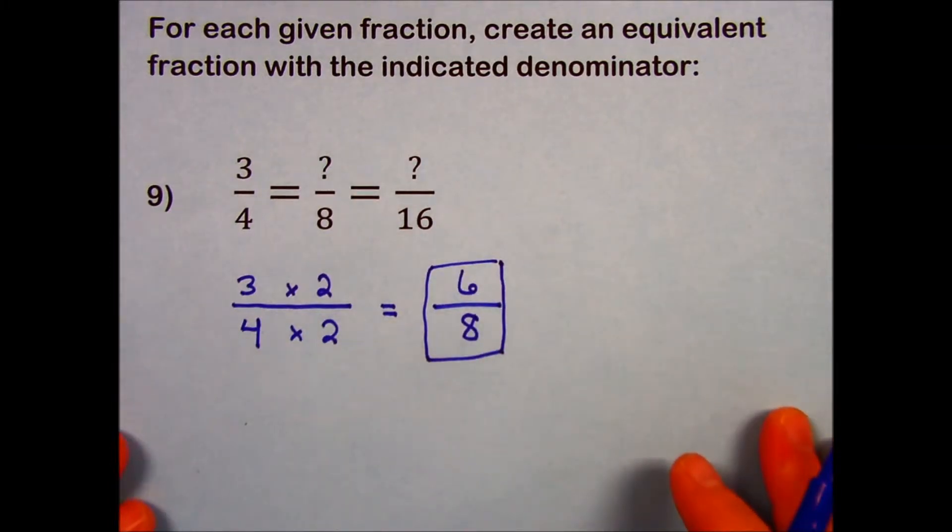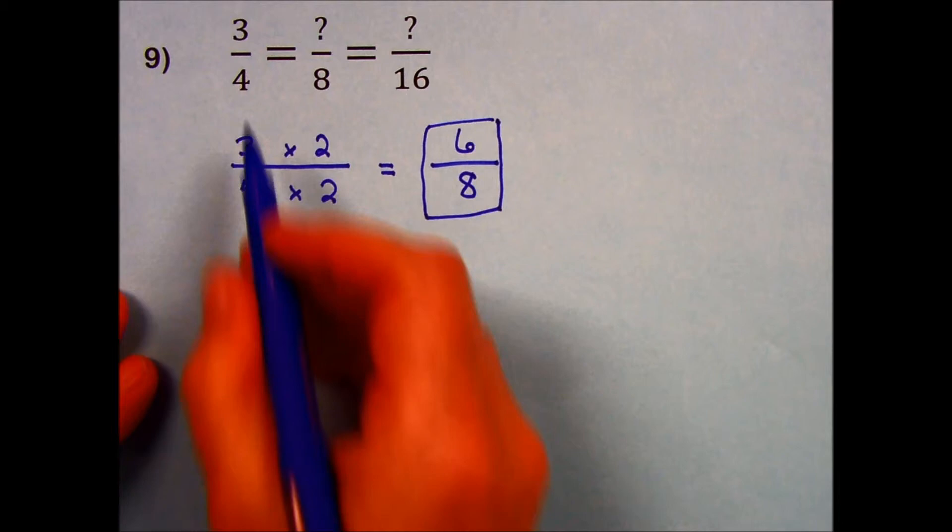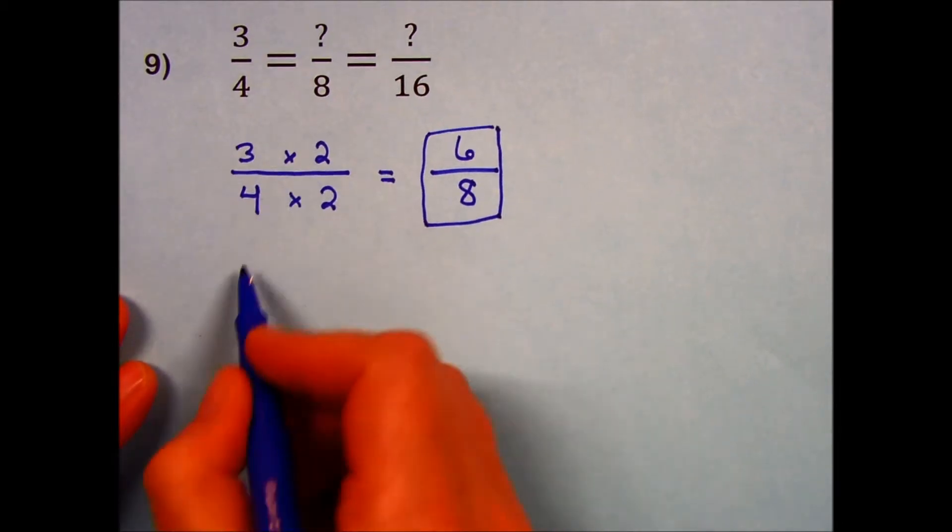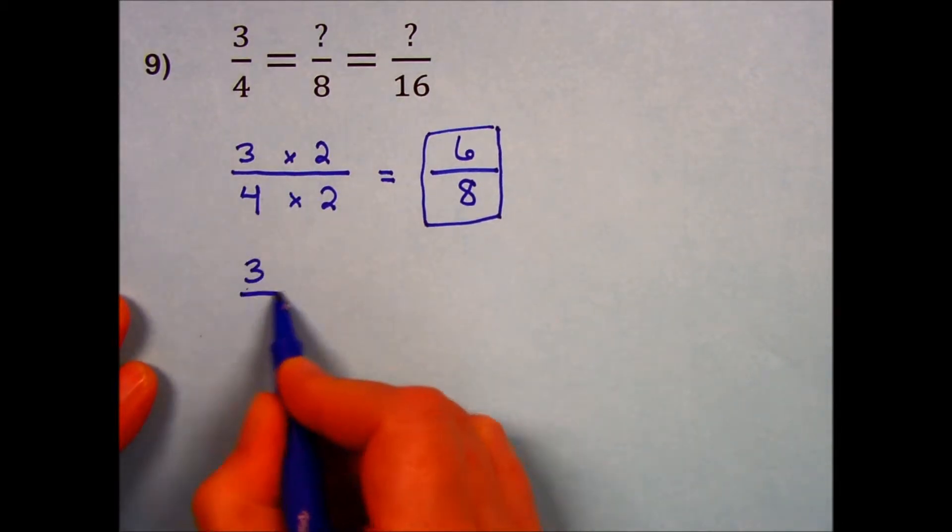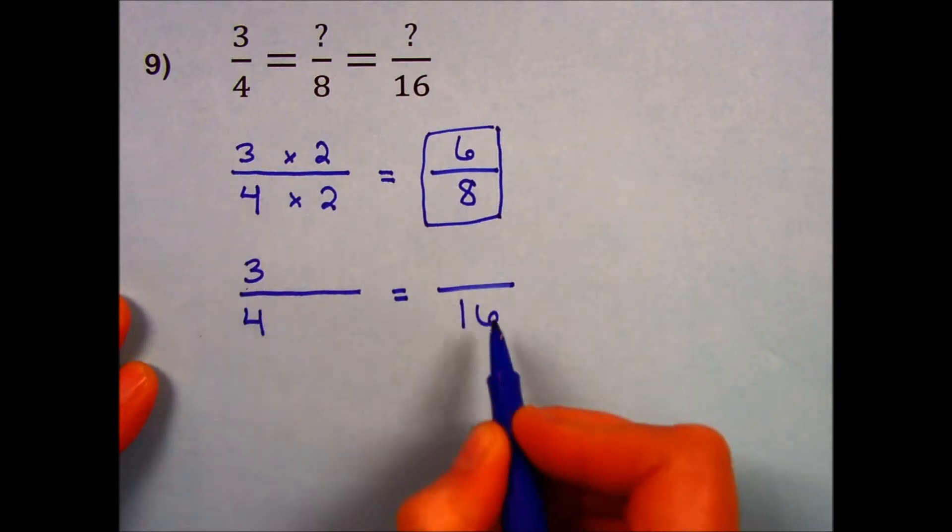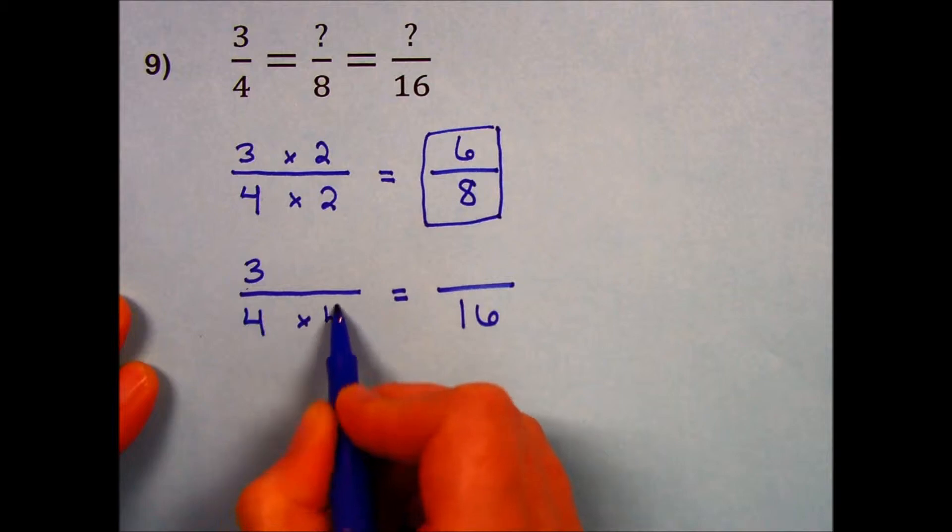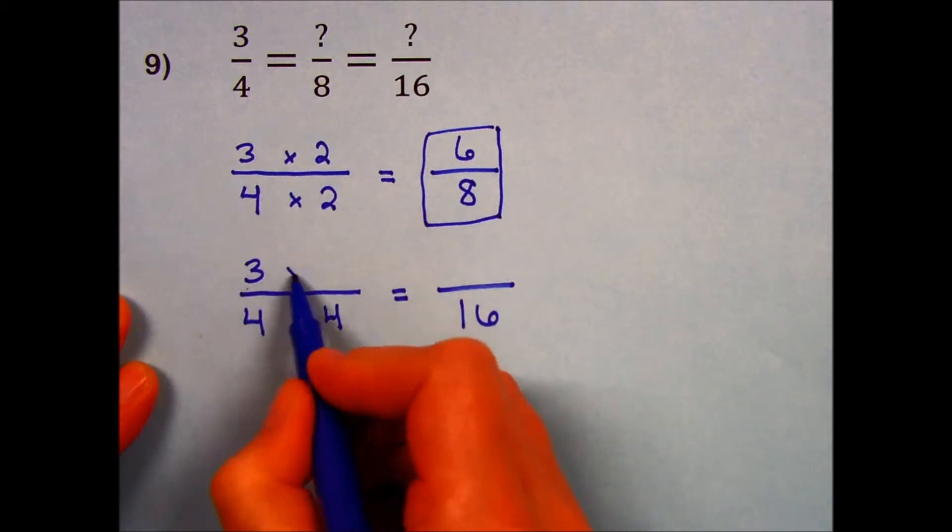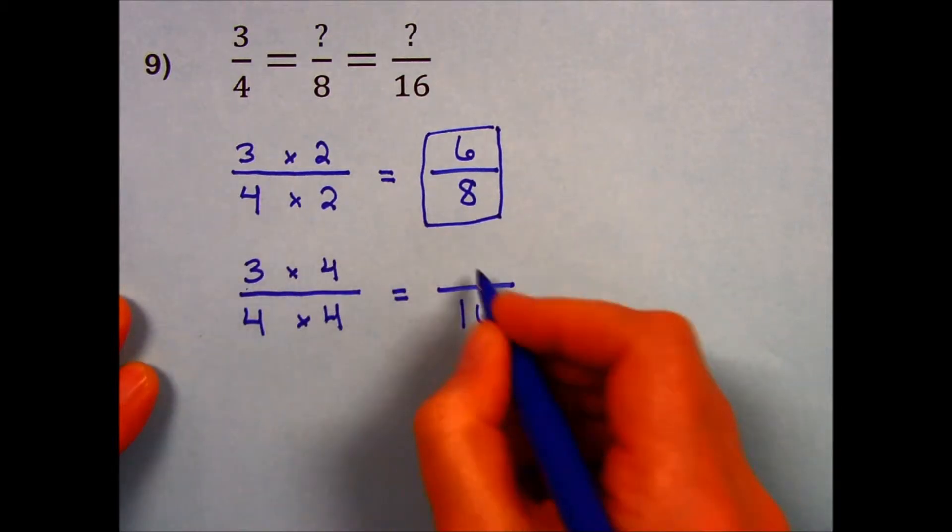And to see how many 16ths is equivalent to 3/4ths, I start with my original, leave extra space. 4 times 4 gives me a denominator of 16. Same thing in the numerator. 3 times 4 is 12.